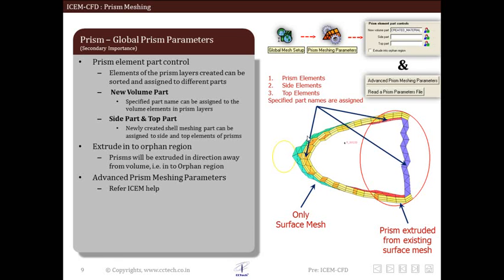Next parameter or option is advanced prism meshing parameters. Many more parameters to control the prism layers are available in ICEM. They can be accessed from here but these advanced parameters are not useful for normal ICEM users. For further information the user's guide of ICEM can be referred.